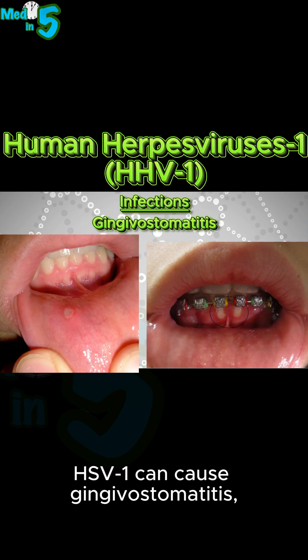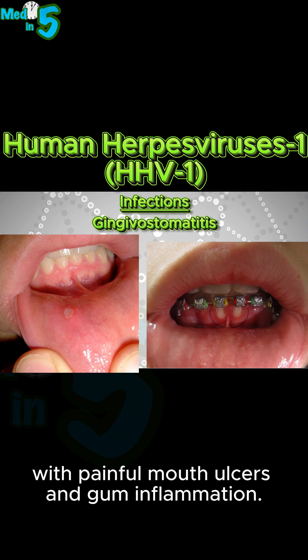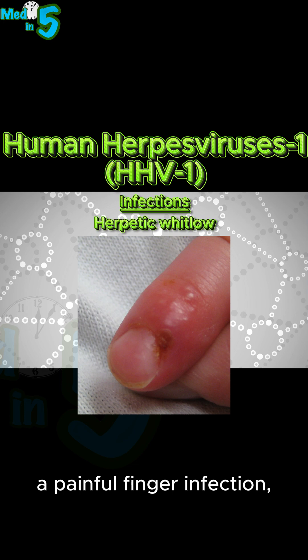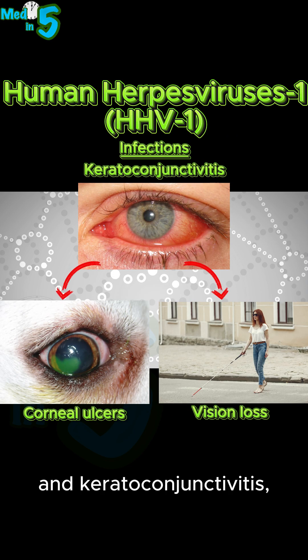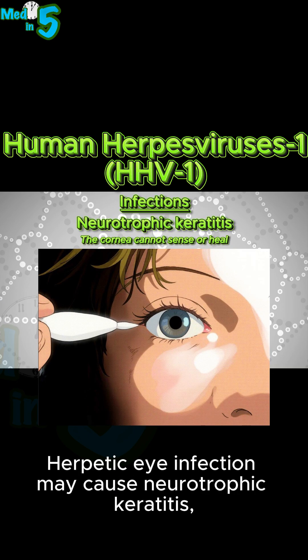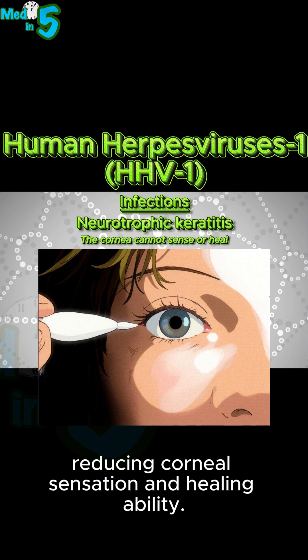HSV-1 can cause gingivostomatitis, with painful mouth ulcers and gum inflammation. It can also cause herpetic whitlow, a painful finger infection, and keratoconjunctivitis, an eye disease that may produce corneal ulcers or vision loss. Herpetic eye infection may cause neurotrophic keratitis, reducing corneal sensation and healing ability.